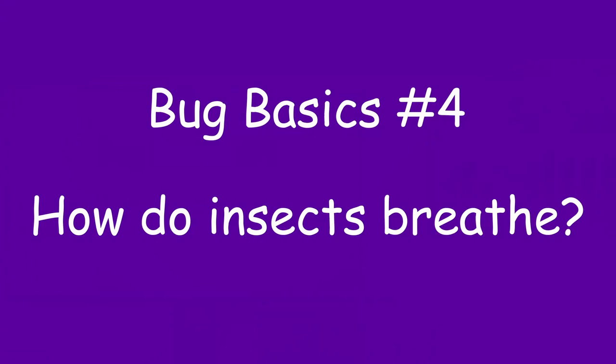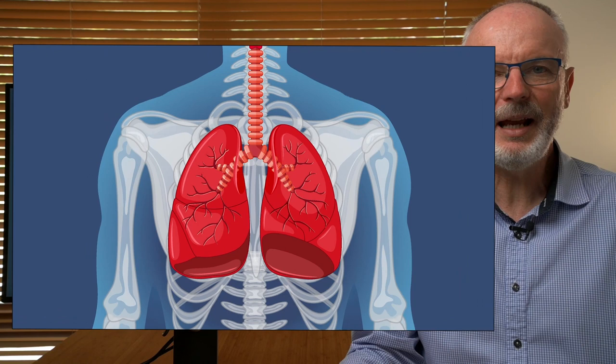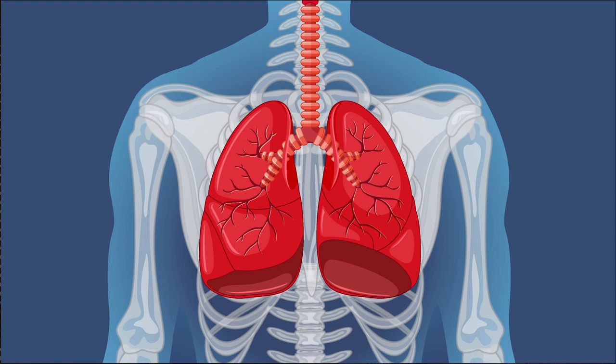We breathe in and out through our nostrils or our mouths, and the air passes through our trachea into our lungs, where oxygen diffuses into our bloodstream and carbon dioxide is removed from our bloodstream.